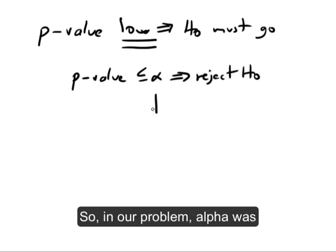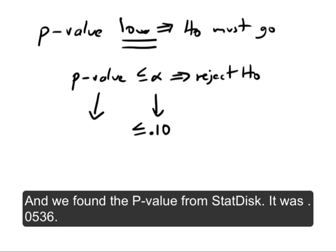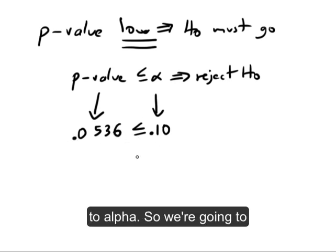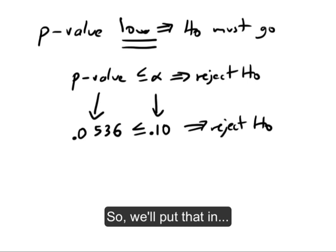So in our problem, alpha was 0.10. That's what they call the significance level. And we found the p-value through StatDisk. The p-value was 0.0536. So notice the p-value is less than or equal to alpha. So we're going to reject H0. That's our decision. So we'll put that in.